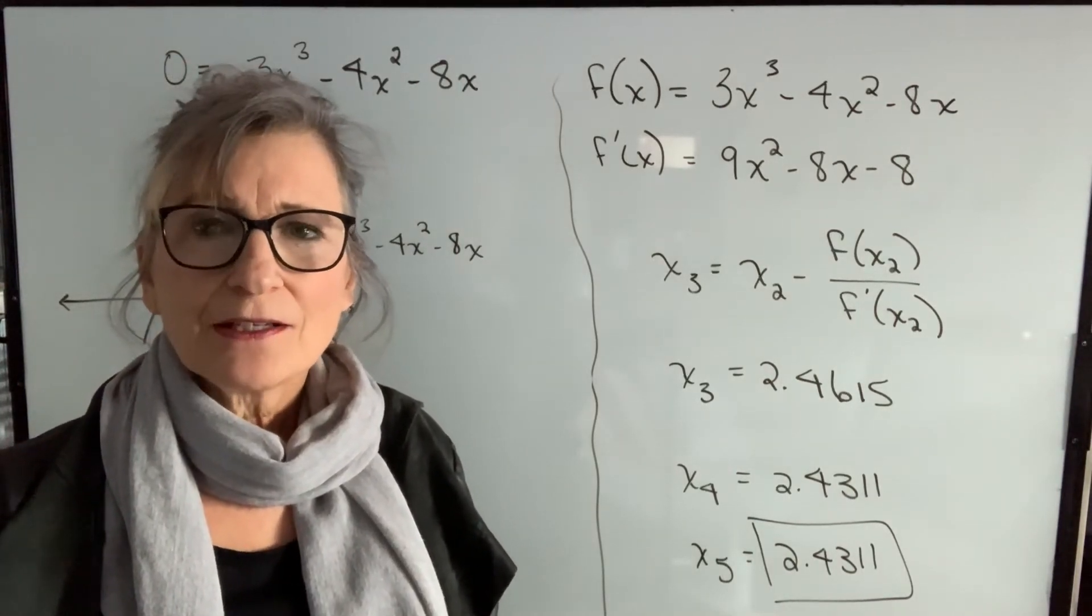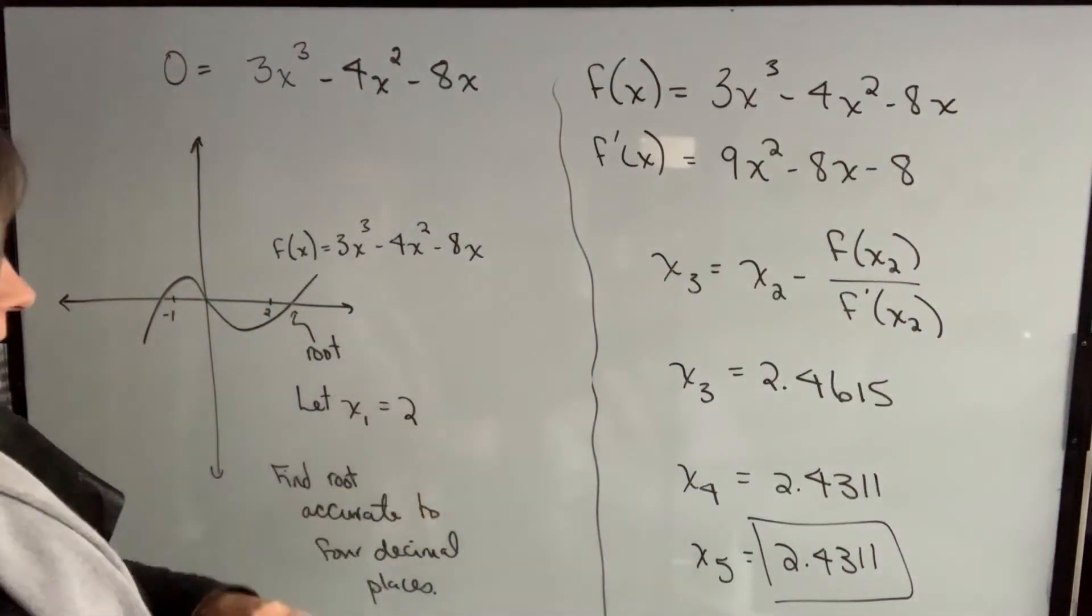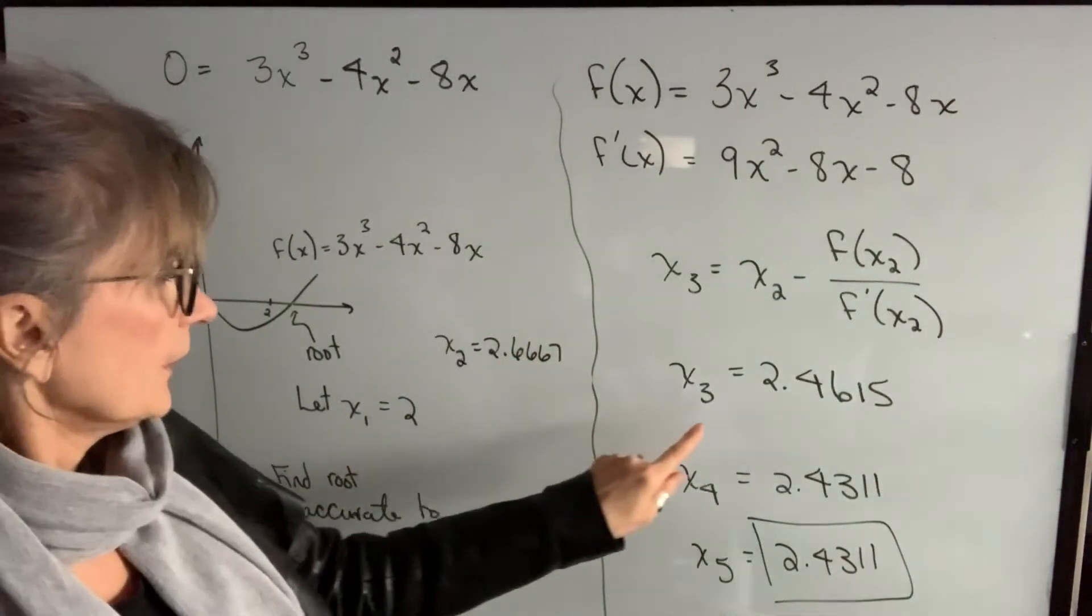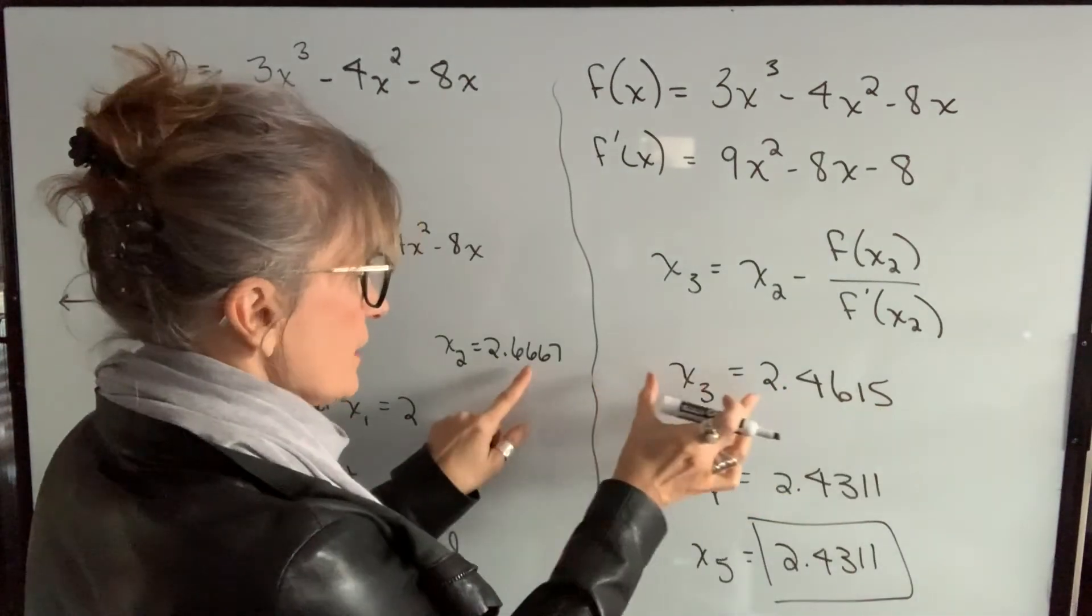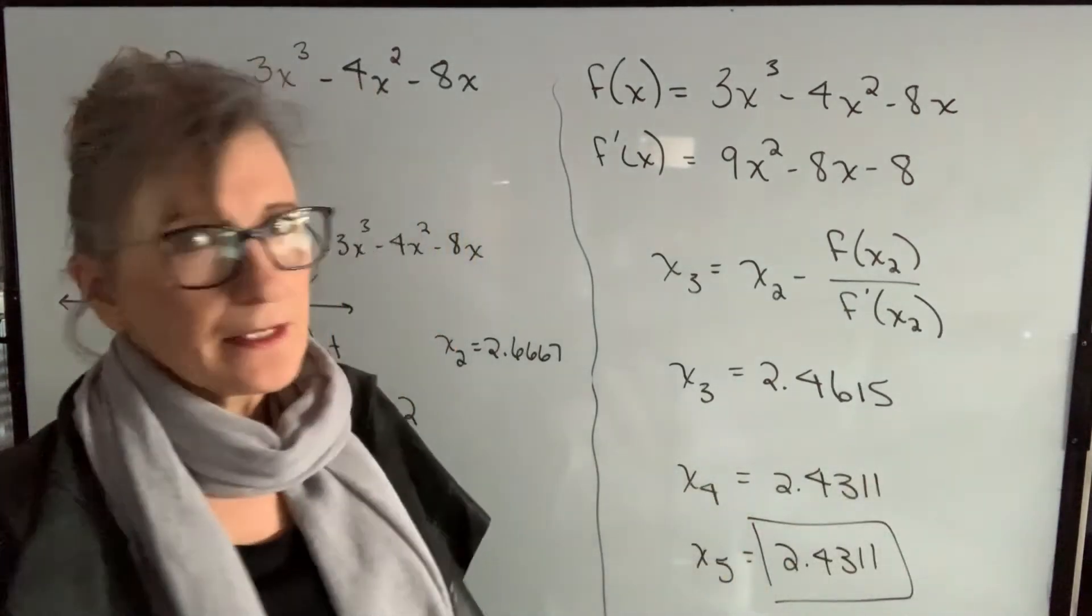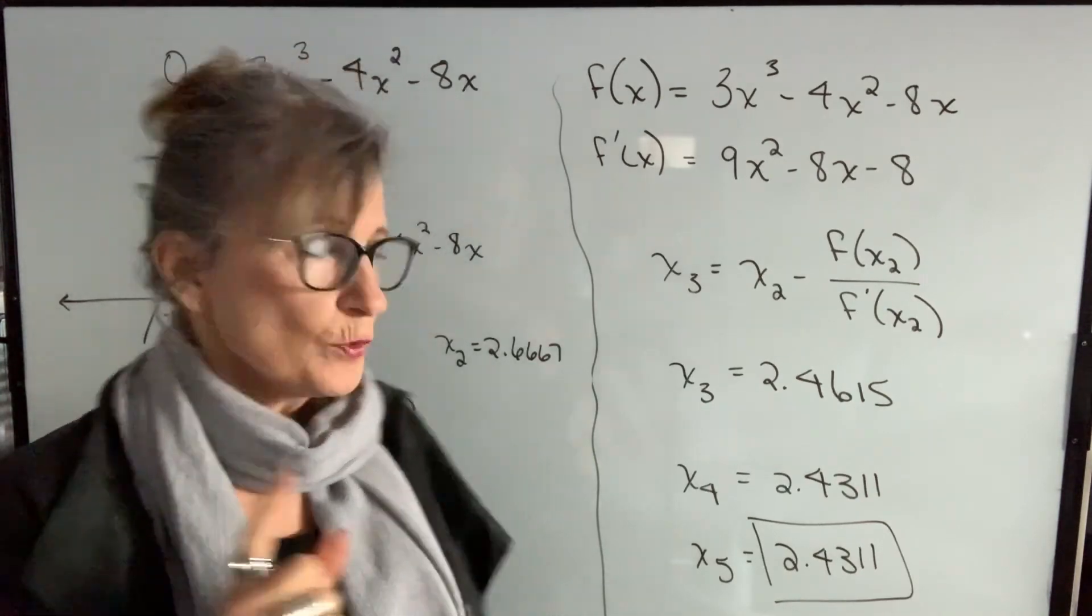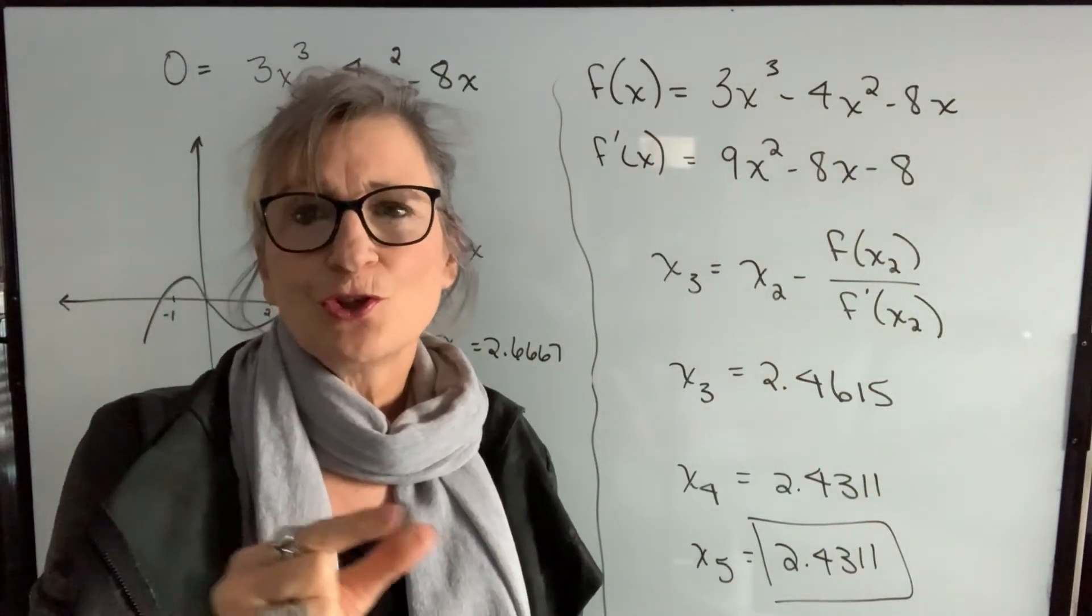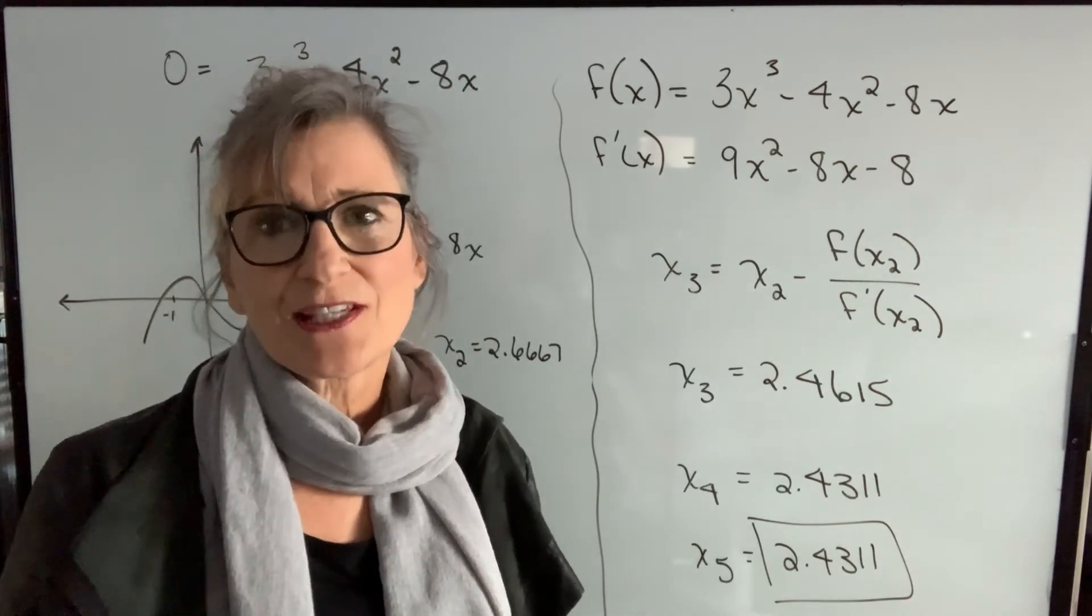You will know if you're on the right track as you're doing these calculations because x1 was 2, x2 was 2.6667. So the difference there we can take a look at and then x3 was 2.4615. So the difference between my x values is decreasing and it's decreasing again and that should be happening. If you're going all over the place then you're doing something wrong. So if you've chosen an x value that's close enough and if you've done everything correctly, you should notice that you're getting closer to a result because the differences between your x values get smaller and smaller.